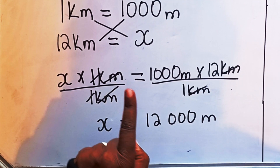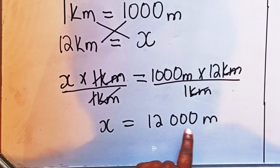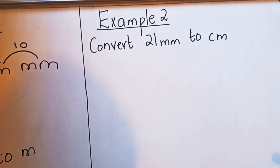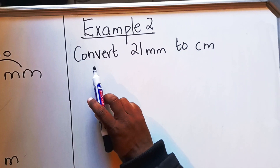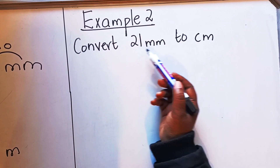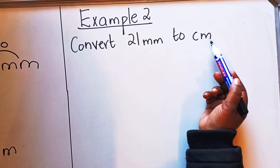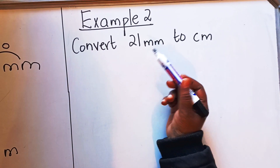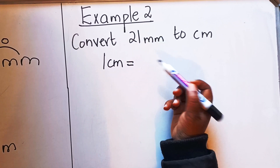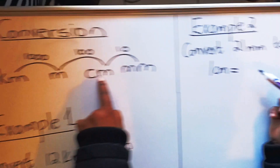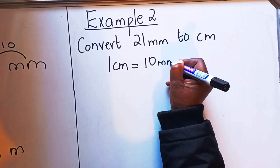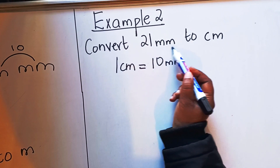That gives you 12,000 and the only units left are meters. So 12 kilometers is the same as 12,000 meters. Now let's look at another example. Here we are required to convert 21 millimeters to centimeters. Ask yourself: which unit is bigger — millimeter or centimeter? A centimeter is bigger than a millimeter. So write: one centimeter equals how many millimeters? From your diagram, one centimeter is 10 millimeters.